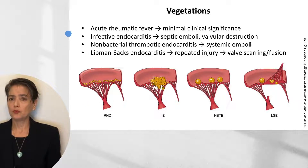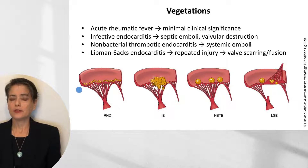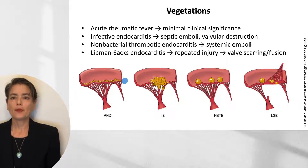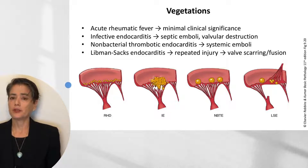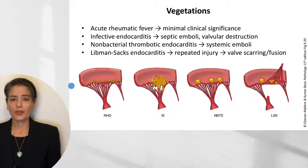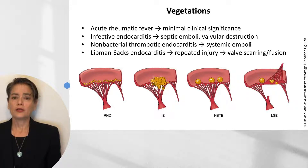In acute rheumatic fever, we do get these verruci — 1 to 2 millimeter vegetations on the lines of closure — but they have minimal clinical significance and do not have a real impact on the patient's health. You can know that they exist, but we don't use this diagnostically, nor is it important for prognosis.